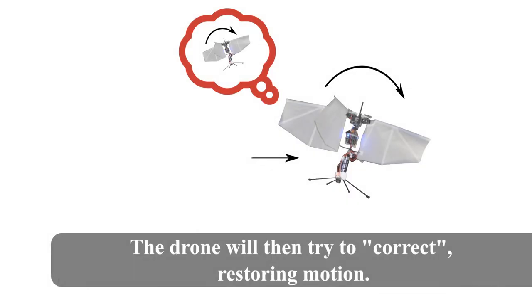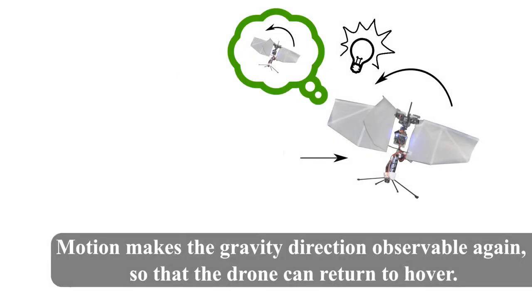The drone will then try to correct, restoring motion. Motion makes the gravity direction observable again, so that the drone can return to hover.